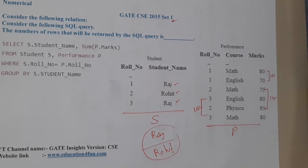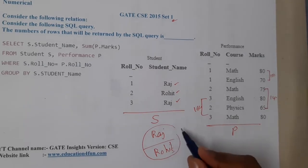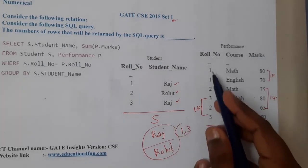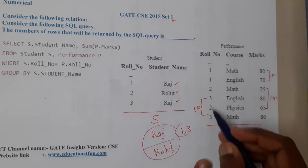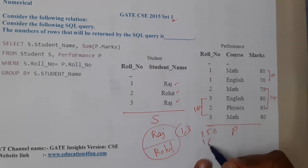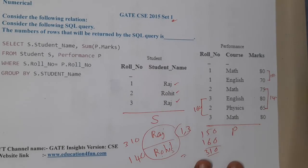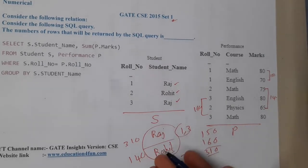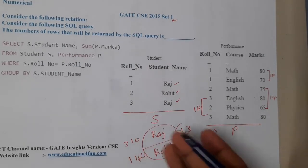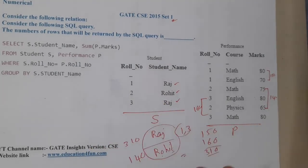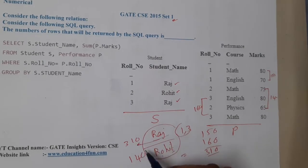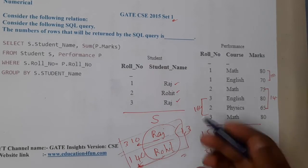Raj corresponds to students 1 and 3, so the total marks for Raj = 150 + 160 = 310. The Rohit value will be 140. So the result shows Raj with 310 marks and Rohit with 140 marks. The question asks how many entries will result — there are only two entries, so the correct answer is 2.